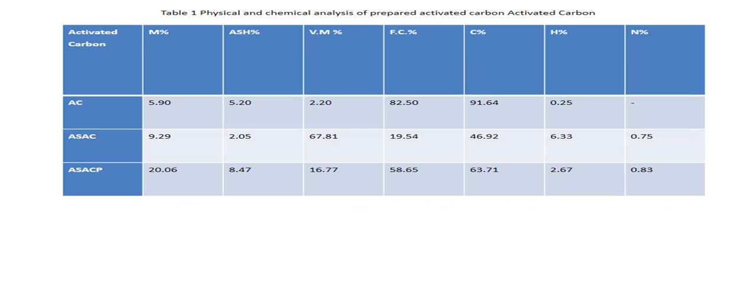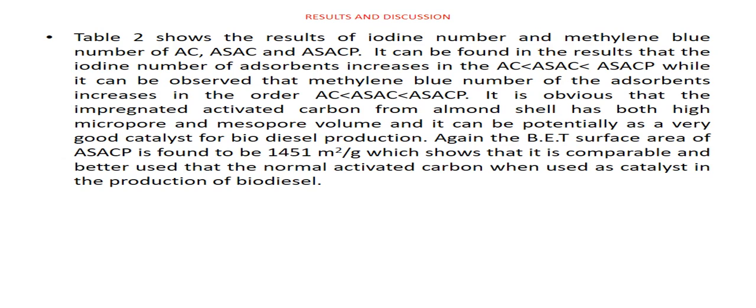This is the table showing the ash content, fixed carbon content, and other physical parameters for ASACP, ASAC, and AC. The second table shows the result of iodine number and methylene blue number.